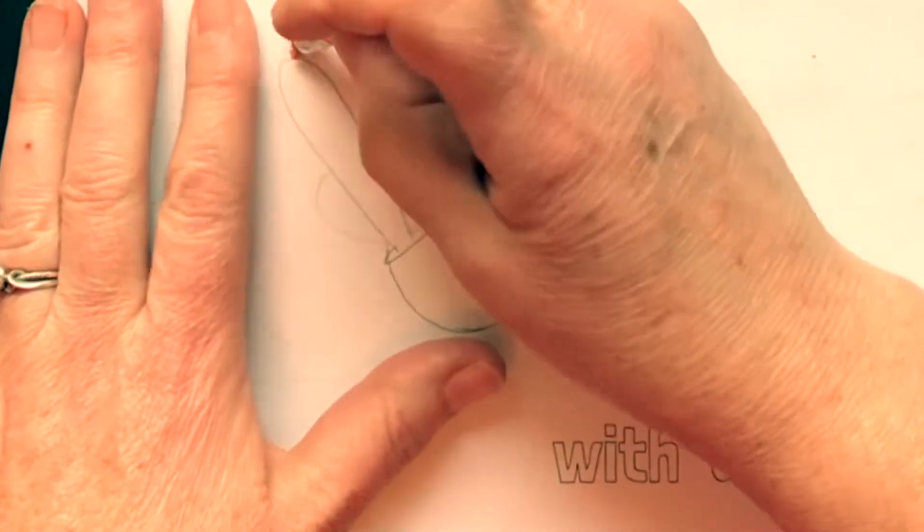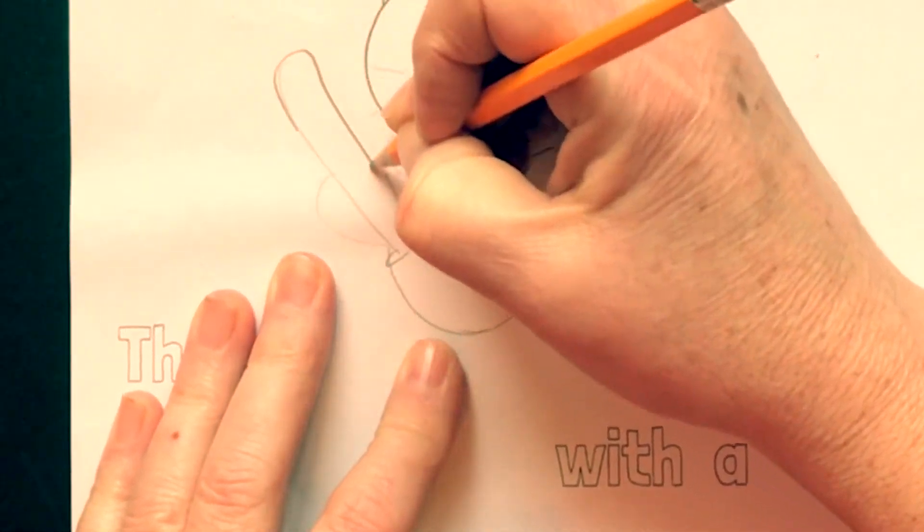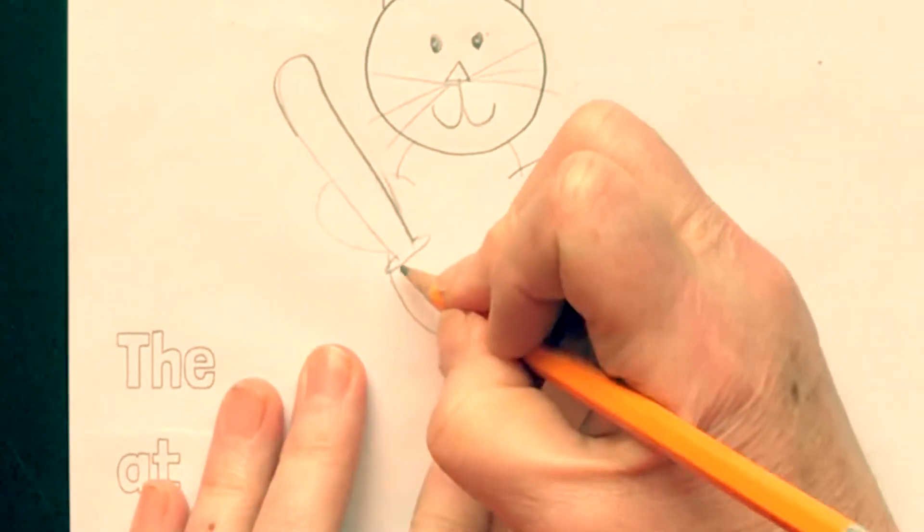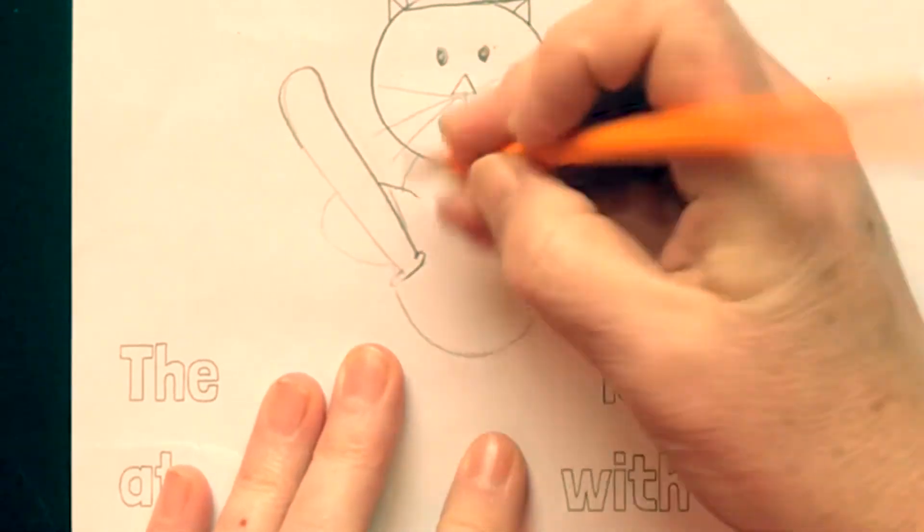So this is going to be a silly story. There's the bat. Actually, that looks more like a sword, doesn't it? I'm going to erase and make it. Does that look more like a bat? Okay, there's my bat.